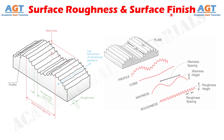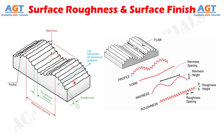Although surface roughness and surface finish are frequently used interchangeably and also signify the same thing, they are different in several ways. Surface roughness refers to the height of macro and micro asperities and irregularities present on a finished surface after machining, while surface finish indicates the quality of that surface using various attributes like fine, rough, good, poor, etc.